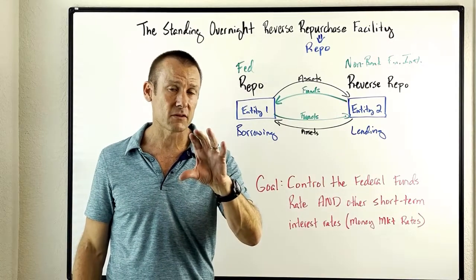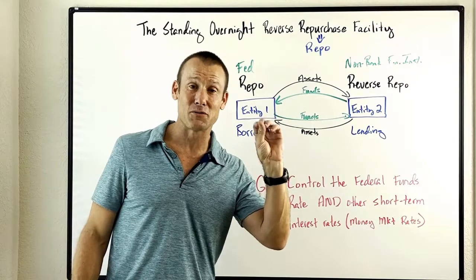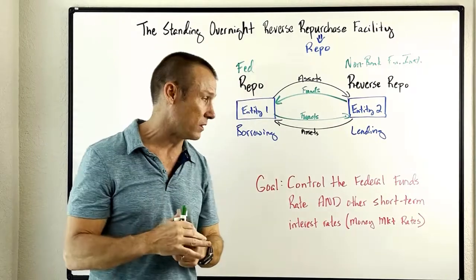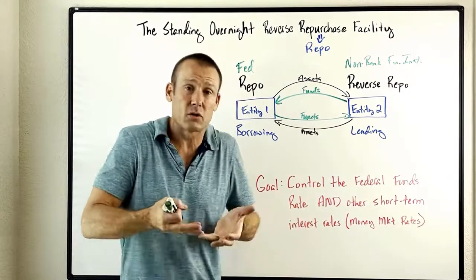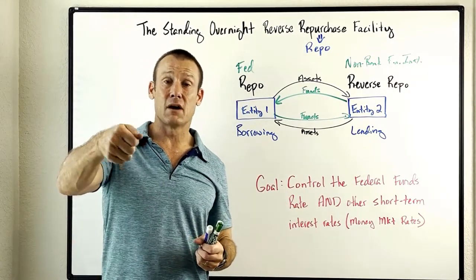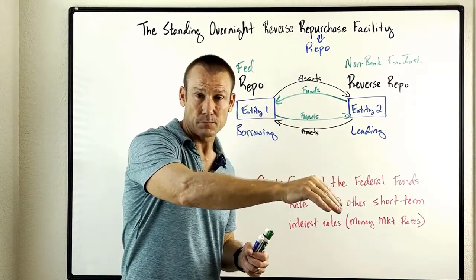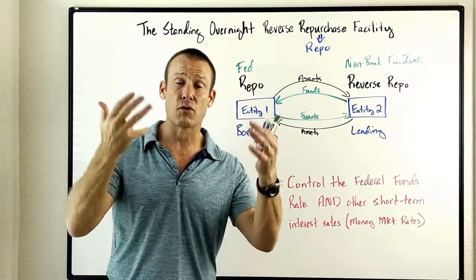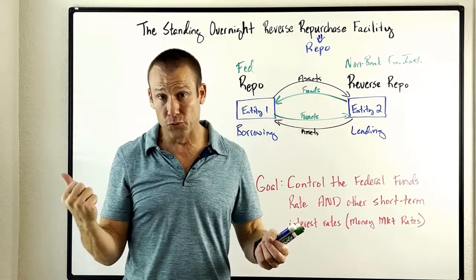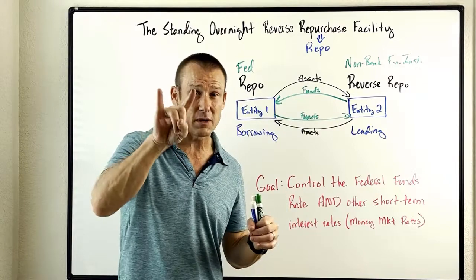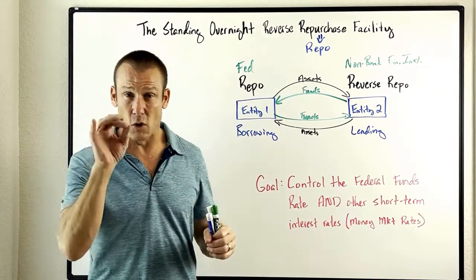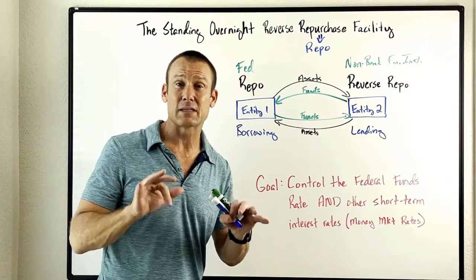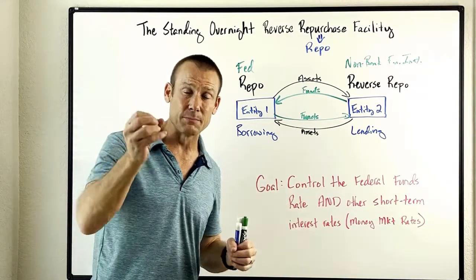In 2015, they implemented the overnight reverse repurchase agreement rate along with the interest rate on reserve balances — they lifted them both up, and we got liftoff. The federal funds rate came up, and other short-term interest rates came up. Under this new ample reserve policy framework, the Fed proved in 2015 that they could still exert control over short-term interest rates without their old tool of open market operations, using two administered rates to implement monetary policy.